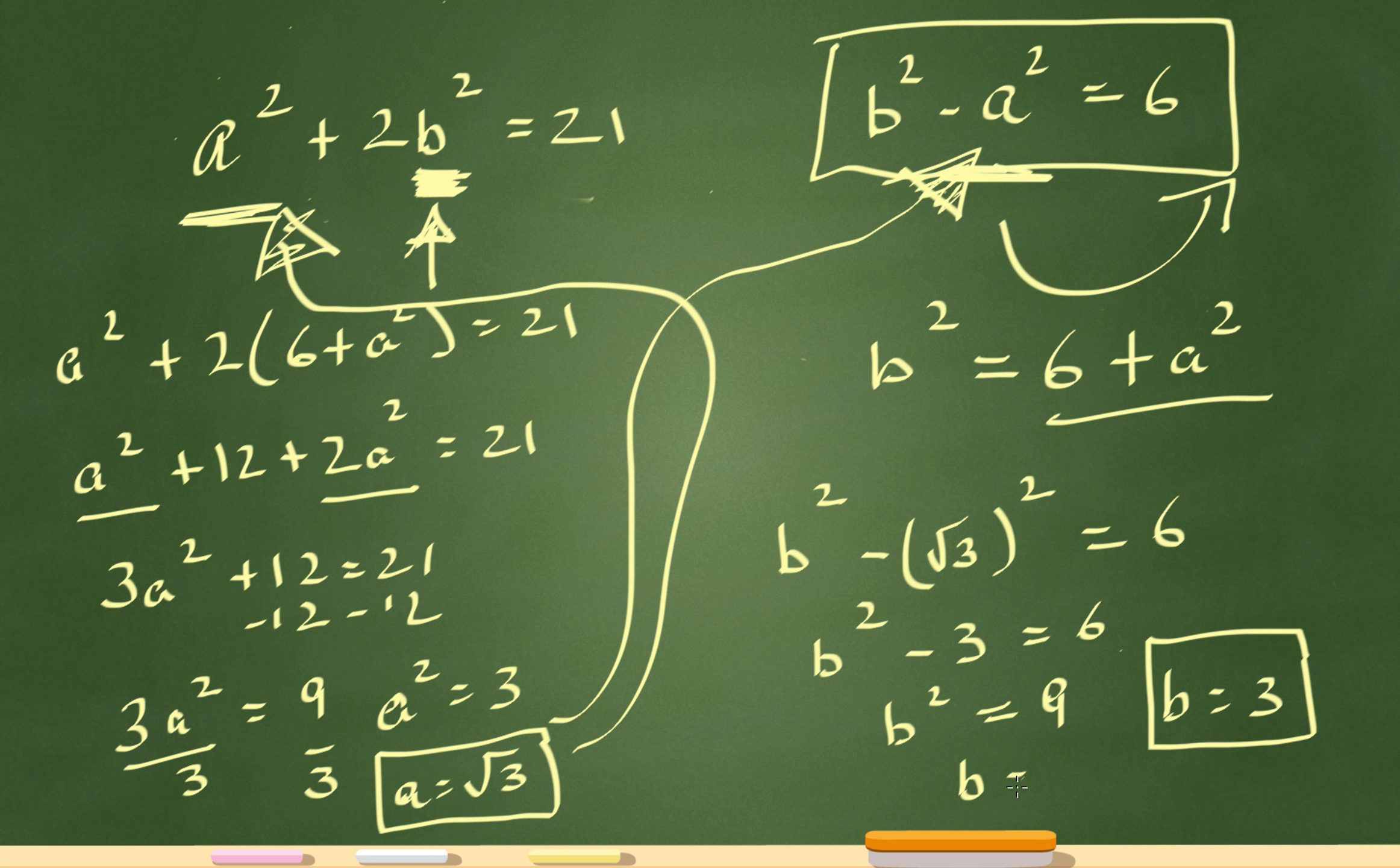You might be thinking that b could equal plus or minus 3, but a couple of things. First, negative 3 is not in the answer choices, and the question says a and b are positive numbers. So b equals 3 is the only one that would work.